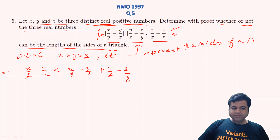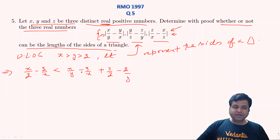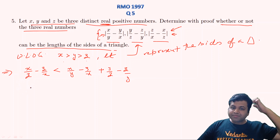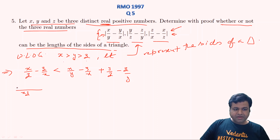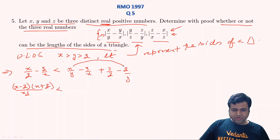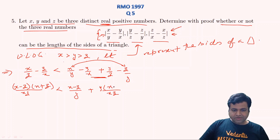So if we can prove this inequality holds, these three represent sides of a triangle; if we reach a contradiction, they cannot. Taking LCM as xz, the left side becomes (x² − z²)/xz = (x − z)(x + z)/xz. Taking the two terms on the right side together with LCM xyz, we get y(x − z)/xyz.